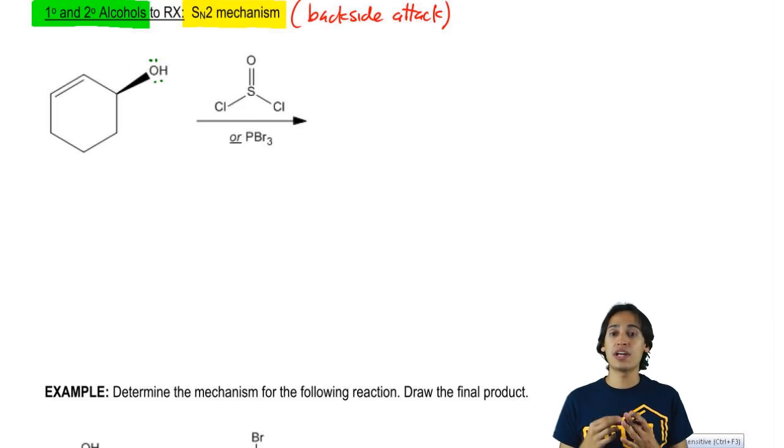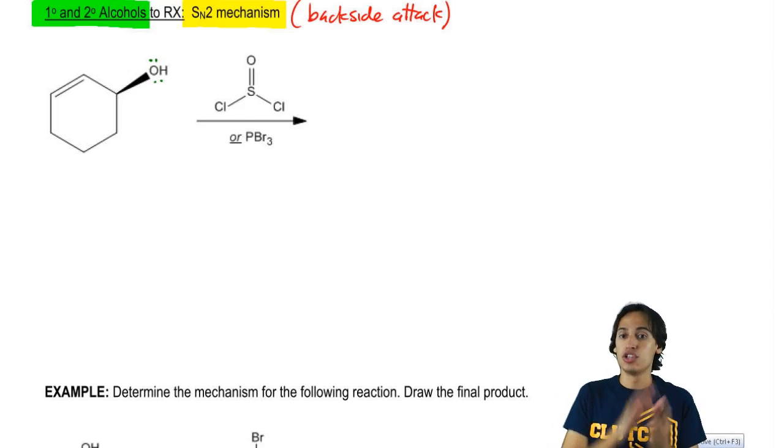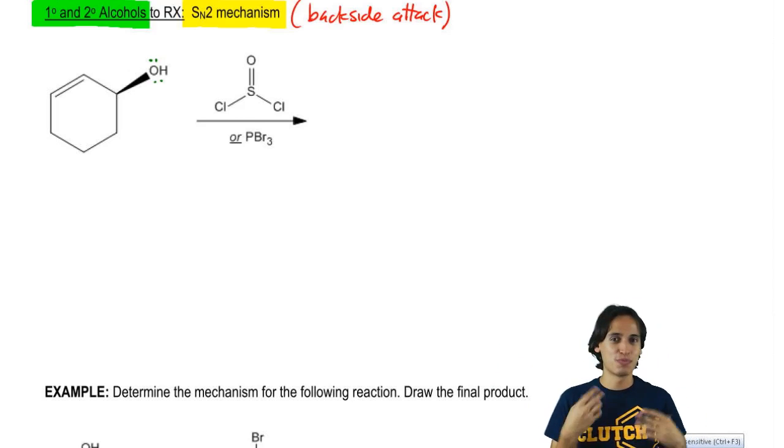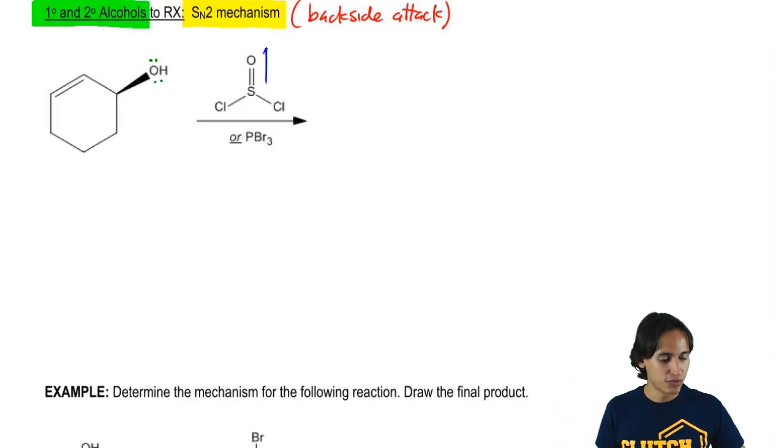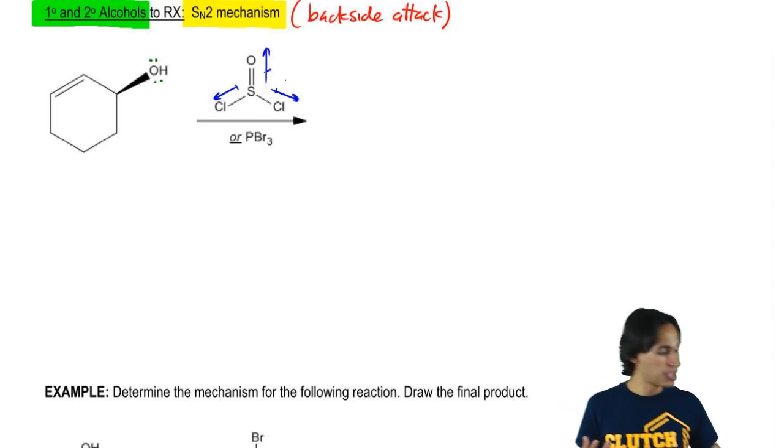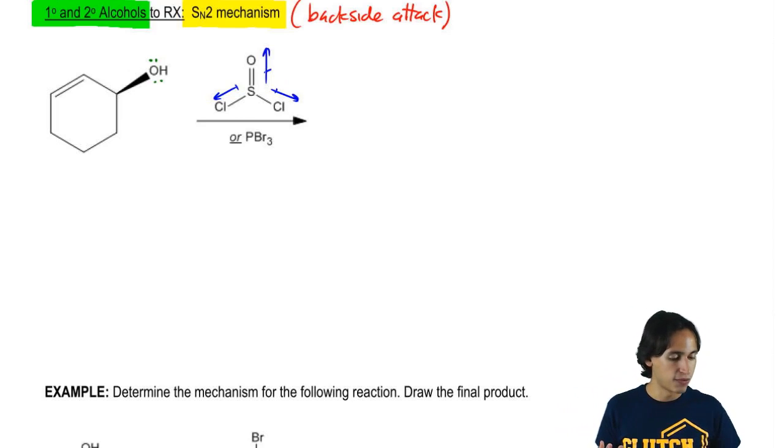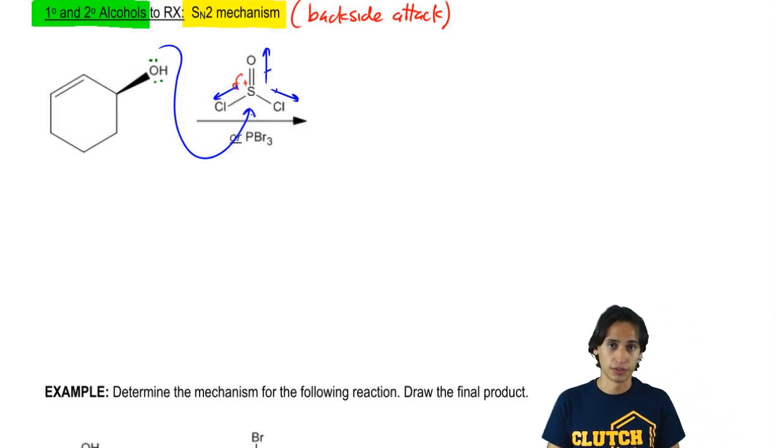Or in other words, which one has the biggest partial positive charge that would be attracted to the negative charge of the oxygen? If you draw dipoles, it becomes painfully clear that you have dipoles pulling in all directions away from the sulfur. What that means is that the sulfur is going to have a very significant partial positive charge, so my arrow is going to start from my oxygen and attack the sulfur.